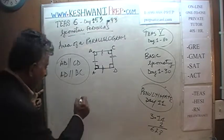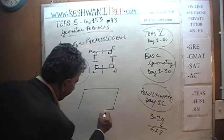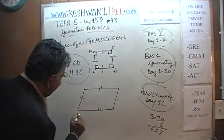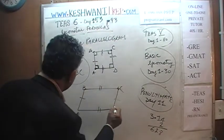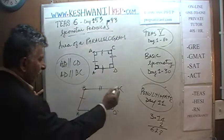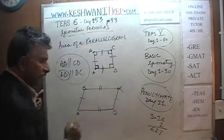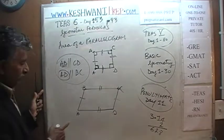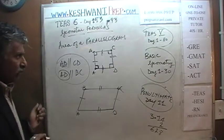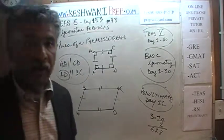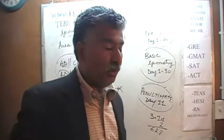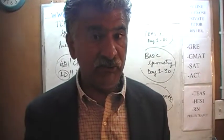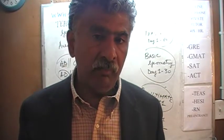Because otherwise, a parallelogram looks like this. Here, I'm telling you that this side is equal to that side, and this side is equal to that side. Line AB is parallel to CD, and AD is parallel to BC. But as you can clearly see, these angles are not 90 degrees and all four sides are not equal. Because of such a special case — all angles 90 degrees and all four sides equal — we give it a special name: instead of calling it a parallelogram, we call it a square.